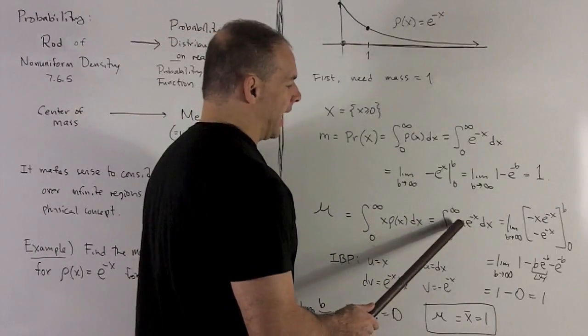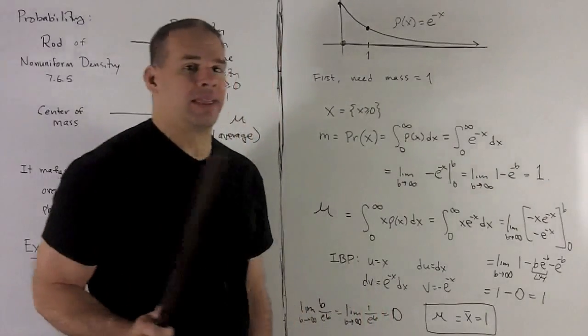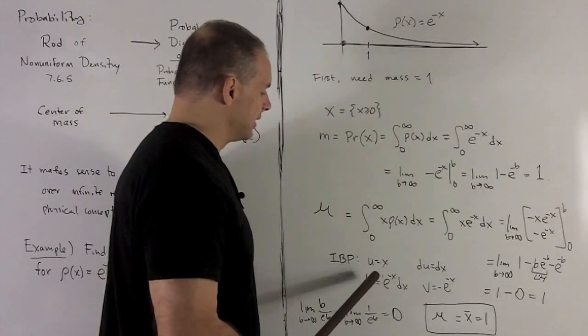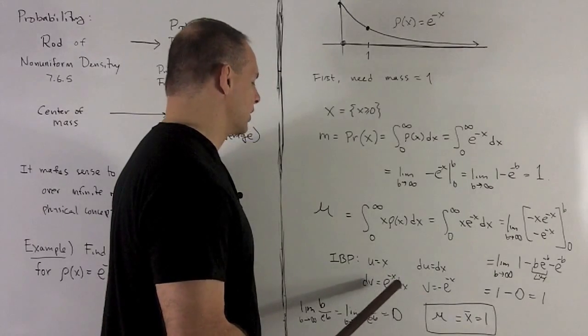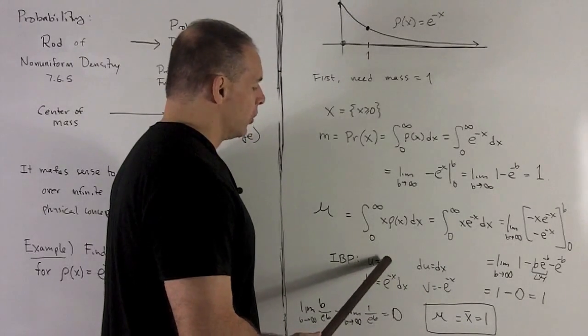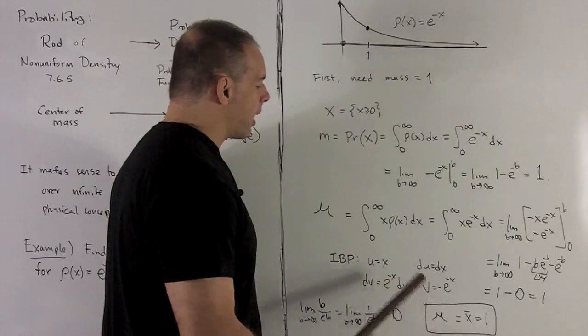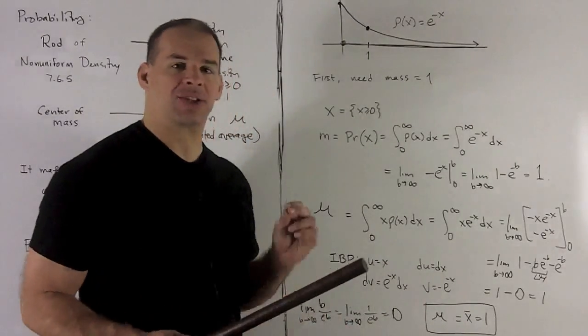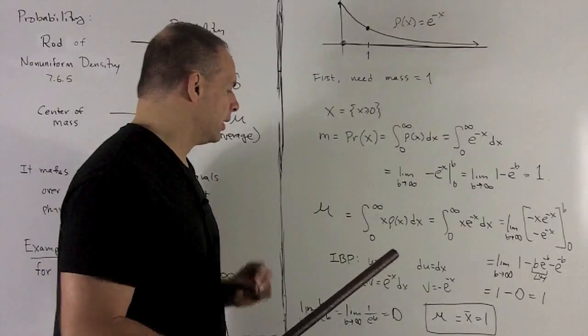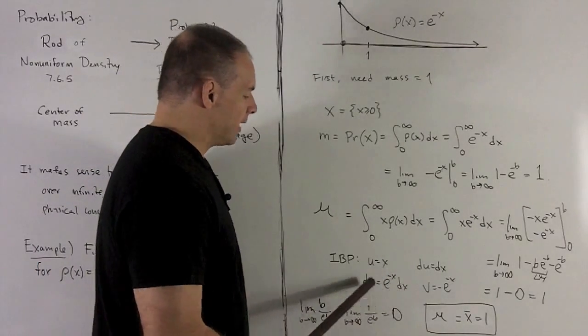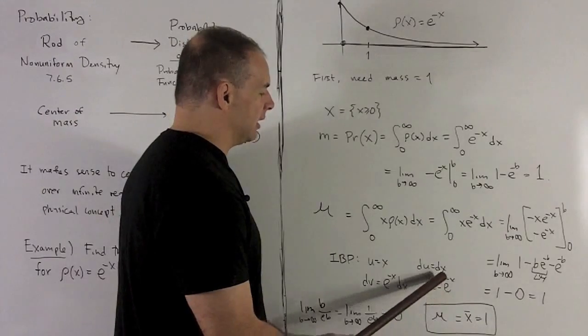So we're going to take the integral of x e to the minus x. That's going to be an integration by parts. So we'll let u be equal to x, dv equal to e to the minus x dx. I want the u to be equal to x because we want to drive the x's out of the problem. And so when I find du, we have just du equals dx. And that's going to do exactly what we want. dv will be equal to e to the minus x dx. Any derivative of that is going to be minus e to the minus x.